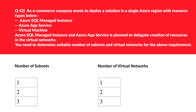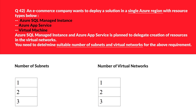This seems to be an interesting question. In the real exam you will get this type of scenario and you have to select from a dropdown. Let's tackle box 1, that is the number of subnets. We need one dedicated subnet for Azure SQL Managed Instance, another dedicated subnet for Azure App Service, and a separate subnet for virtual machines. That sums up to 1 plus 1 plus 1, which equals 3 subnets total.